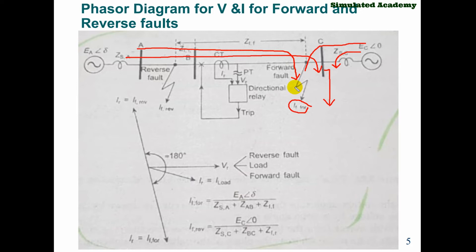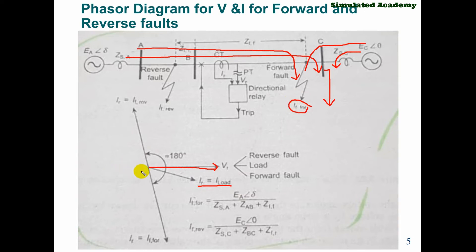When a fault occurs at this point on the network, the fault current comes from generator A on one side and generator C on the other side. The fault current direction and load current direction are the same in this case. The relay's direction is also the same.